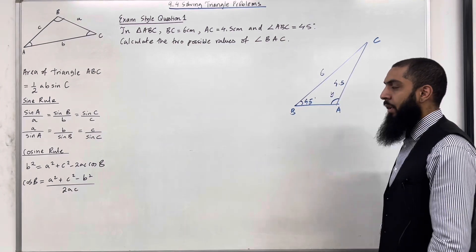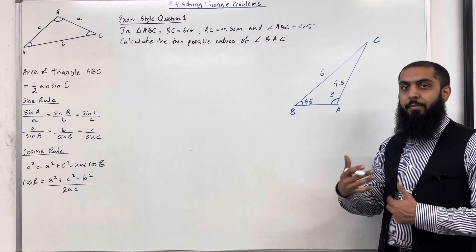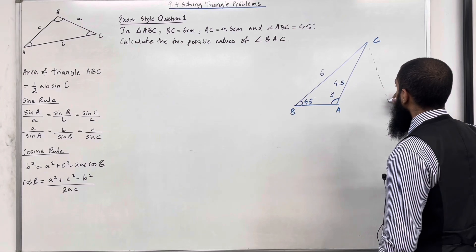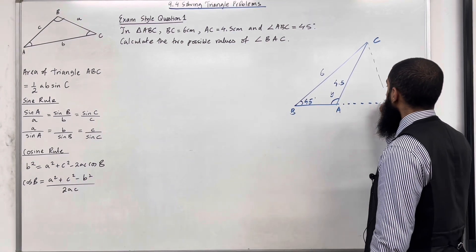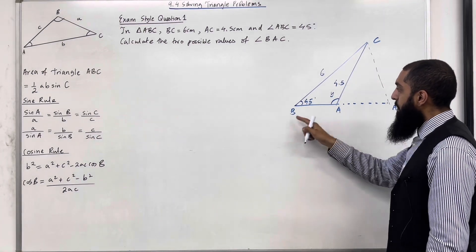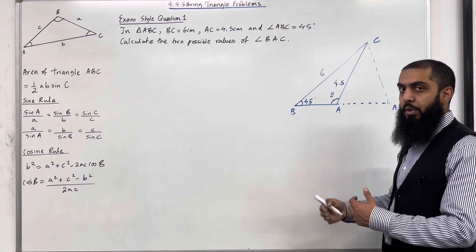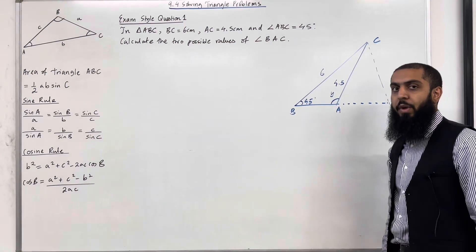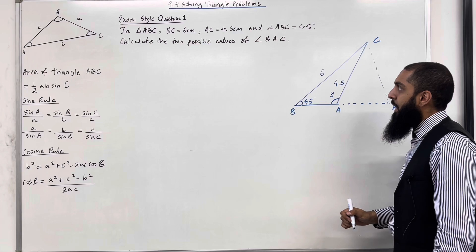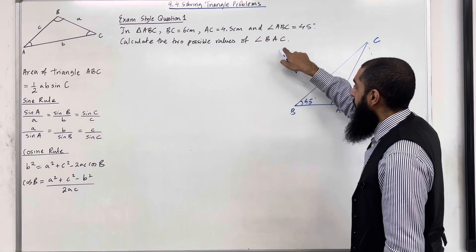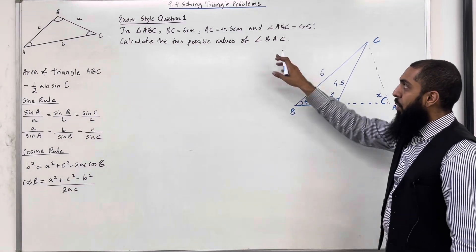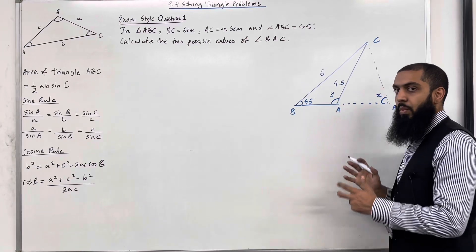Let's call it Y. Triangle ABC is ambiguous because it has multiple representations. Alternatively, we could have drawn the vertex for A somewhere else, creating a new larger triangle ABC. The smaller triangle is also ABC — there are multiple representations. Hence this is the ambiguous case, which is why it says calculate the two possible values of angle BAC. The middle letter is A, so this angle is angle A — we can call it X.